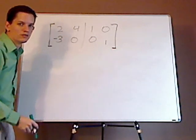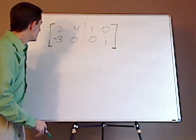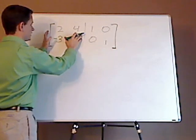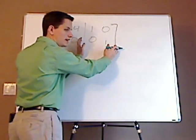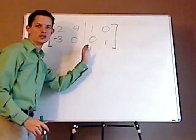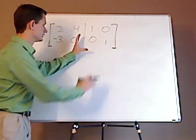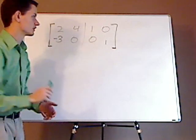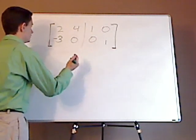So basically what you want to do is your goal is to get the identity matrix here. Once you do that, this portion of the augmented matrix is going to be your multiplicative inverse matrix. So you just do transformations.